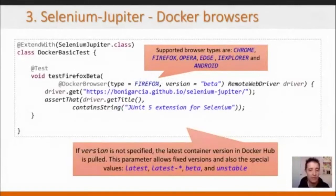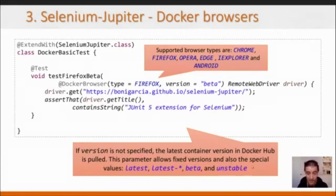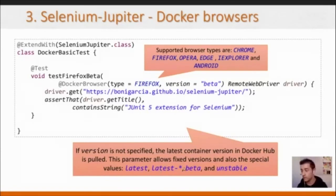You specify the browser type via a Java enum, and optionally the version. If you don't specify a version, by default it's the latest. Selenium Jupiter connects to Docker Hub at test execution time and checks the latest version, so by default this is an evergreen test using always the latest version. You can also use 'beta', 'unstable', or 'latest-1', which means the previous stable version — for example, if Chrome 85 is stable, latest-1 gives you Chrome 84.